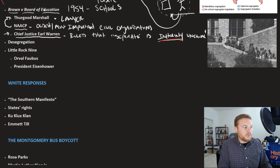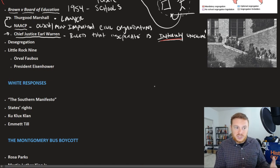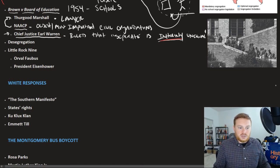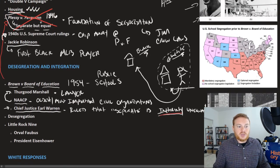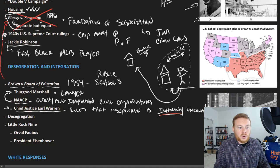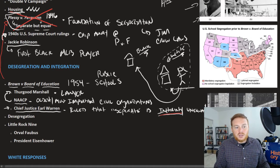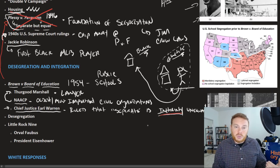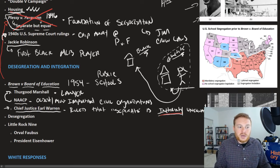A Supreme Court ruling is one thing — it's one thing to say segregation is against the law of the land. But as you can see from this map, at least a third of the United States was very heavily segregated. The red states are states where segregation was mandatory; the blue states are where it was optional. The Supreme Court ruling was important, but it would also be a matter of enforcement — and when it came to actually desegregating schools, it was a rather slow process.